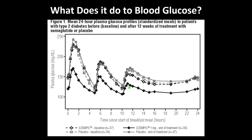Placebo at end of treatment doesn't really look that different from placebo at baseline. But notice that patients taking Ozempic still get an increase in glucose, but it is quite suppressed — a lower response, which is what it's supposed to do.